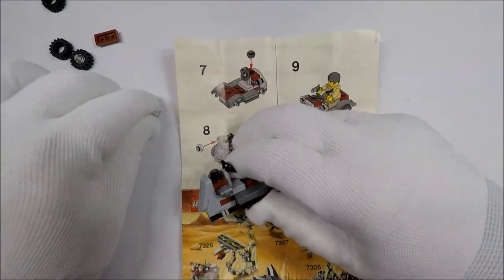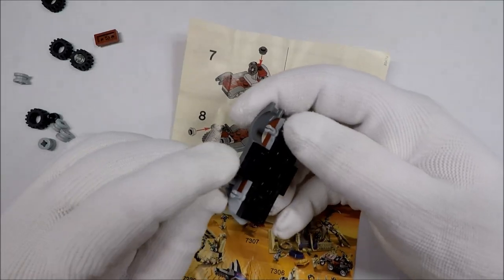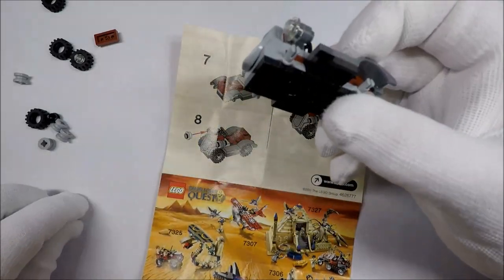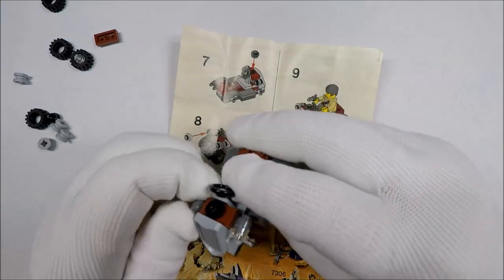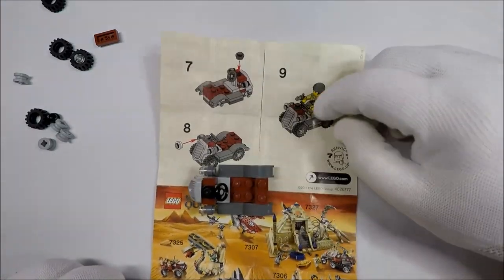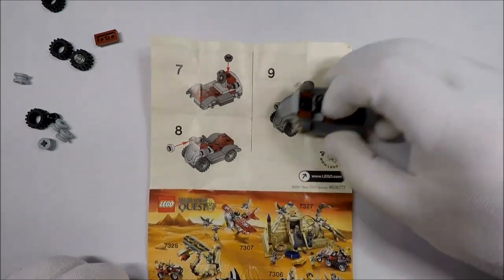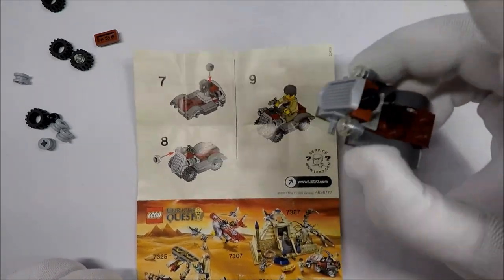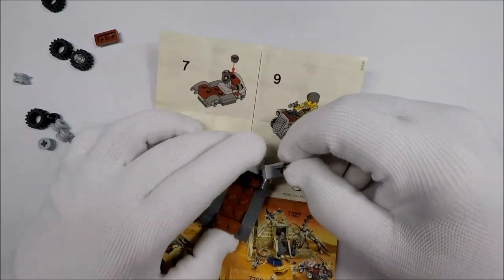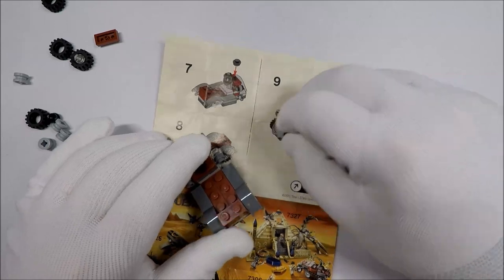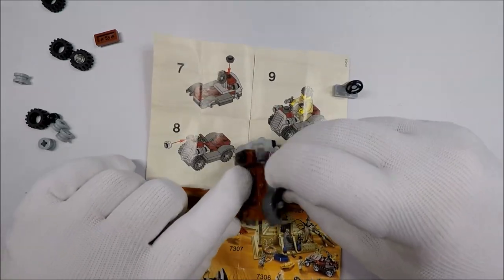Alright. And then we add in the headlights, which we were pretty sure we were going to do already. Right there and right there. And then... Did I miss a piece somewhere? I did miss a piece. I see what I did. There should be one more red piece in there.